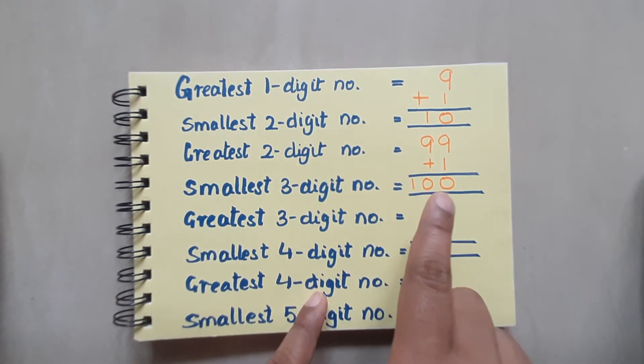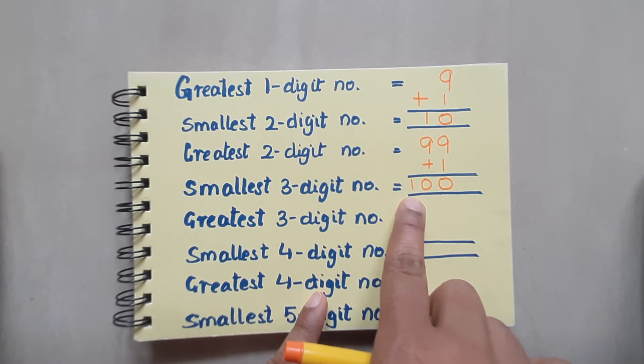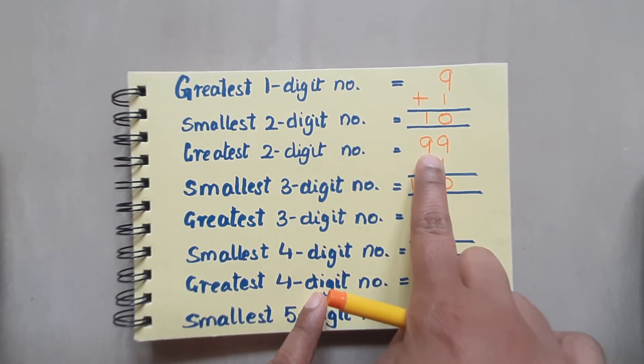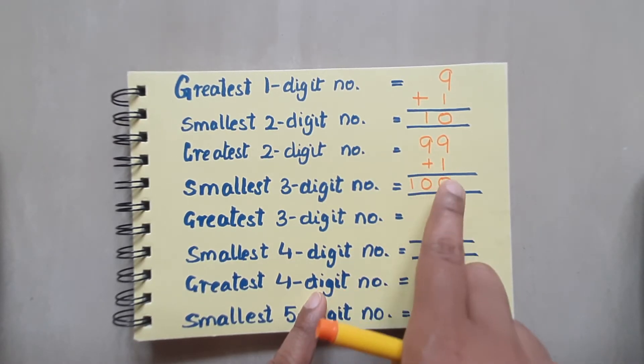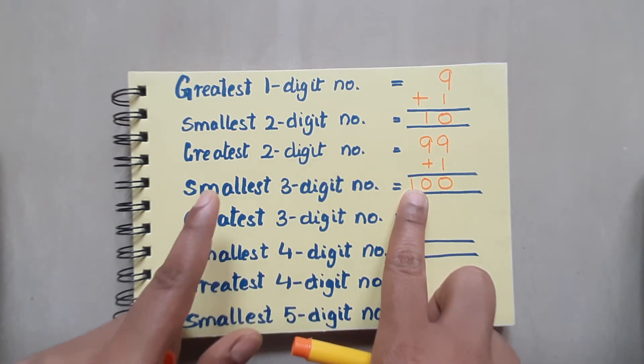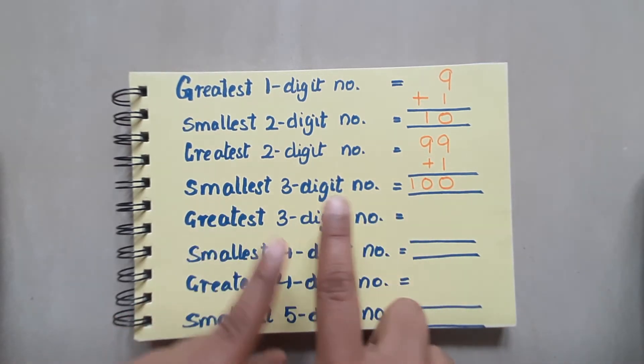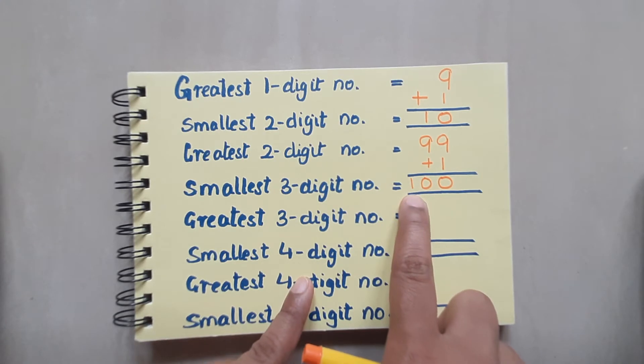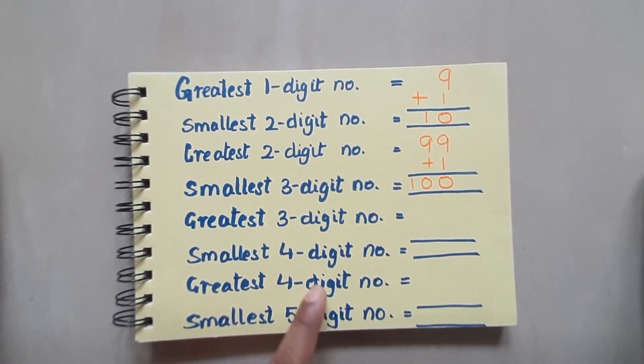It's just the recap that how do we get a new place. Here we had 99. So when we have added 1, we have got 100. So this is the smallest 3 digit number. And here a new place has been added, that is 100s.